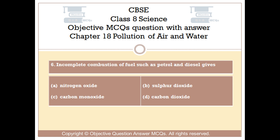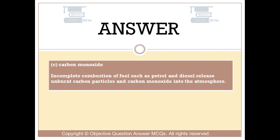Question number 6. Incomplete combustion of fuel such as petrol and diesel gives? Option A: Nitrogen oxide. Option B: Sulfur dioxide. Option C: Carbon monoxide. Option D: Carbon dioxide. The right answer is Option C — Carbon monoxide. Incomplete combustion of fuel such as petrol and diesel releases unburned carbon particles and carbon monoxide into the atmosphere.